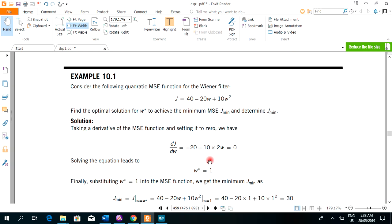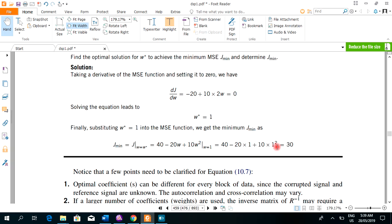We are given the mean square error which is 40 minus 20W plus 10W square and we are asked to find the optimal W and J minimum. To find the optimal W we have seen that we have to just take the first derivative. If we take the first derivative, it comes out to be minus 20 plus 20W and put that derivative equal to 0, we can get the value of W which comes out to be 1 as in this case. And substituting this value in the given equation of J, we can get the minimum value of J which is 30.